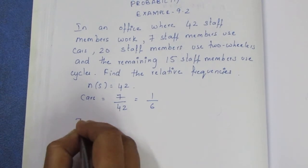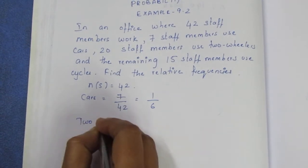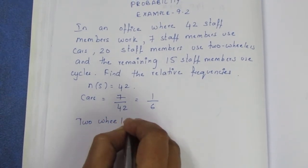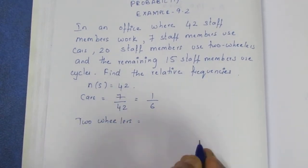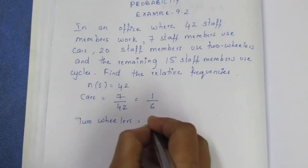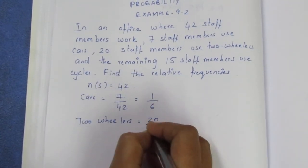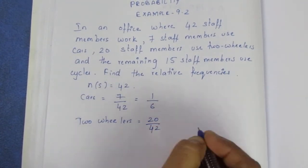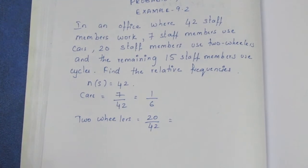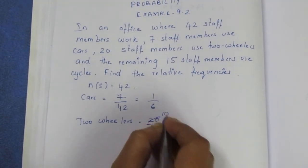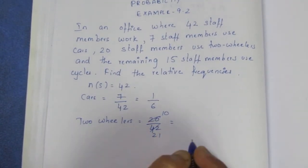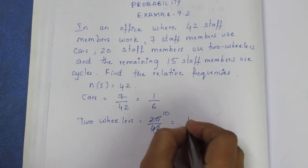Next, 2-wheelers. 2-wheelers total is 20, so the probability is 20 by 42. Cancel by 2: giving us 10 by 21.